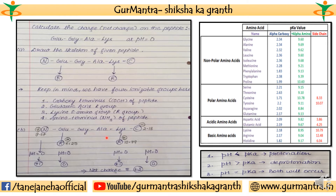Next step: pK values. If you are not provided with the pK value in the given question, you can memorize them. For the alpha amino group of glutamic acid, its pK value is 9.67. For the glutamic acid R chain, its value is 4.25. For lysine's R chain, it is 10.79 — you can approximate that as around 11. The carboxy terminus pK value for lysine is 2.18. You can use approximate values.